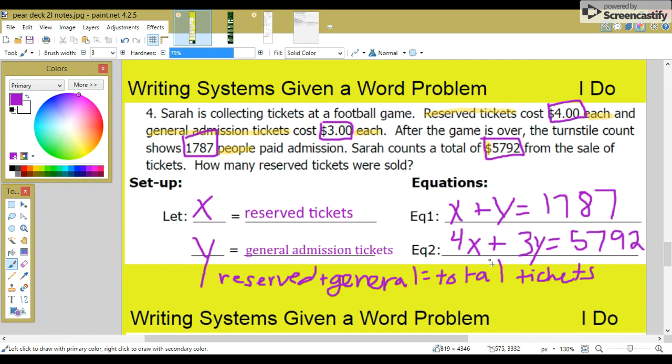This is the total amount of money. It's four dollars for each reserved and three dollars for each general. And if you add those together, you get the total cost, the total price.